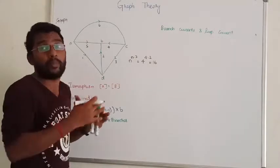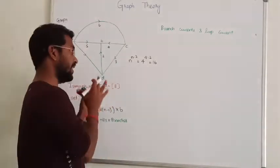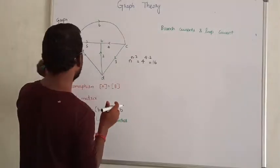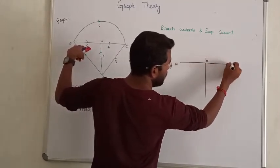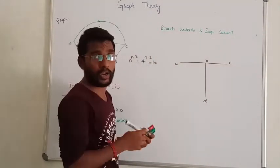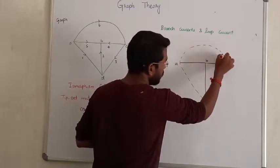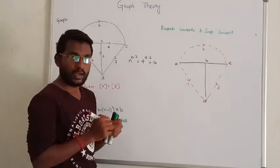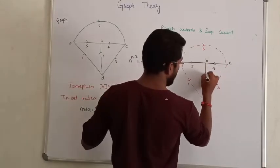Let me consider an example. I will take nodes A, B, C, D and connect them. We have to connect all nodes without forming a closed loop — that is the tree. The branches not in the tree are called links. In this example, branch number 6, branch number 3, and branch number 1 are the links. The remaining branches — branch number 5, branch number 4, and branch number 2 — are the twigs.